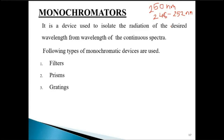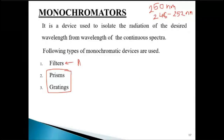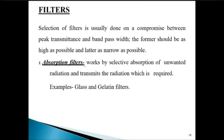There are three main types of monochromators: filters, prisms, and gratings. Prisms and gratings can be grouped together because they do not absorb any radiation. Filters, on the other hand, work by absorbing the light to provide monochromatic selection. Let us see what filters are.